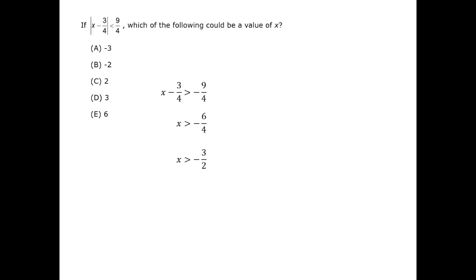There is another case. The distance from 0 could be on the right side, in positive numbers. In this case, we can write the following equation, and simplify by adding 3 quarters to both sides again. Once again, we can reduce the fraction, and we obtain the following inequality.